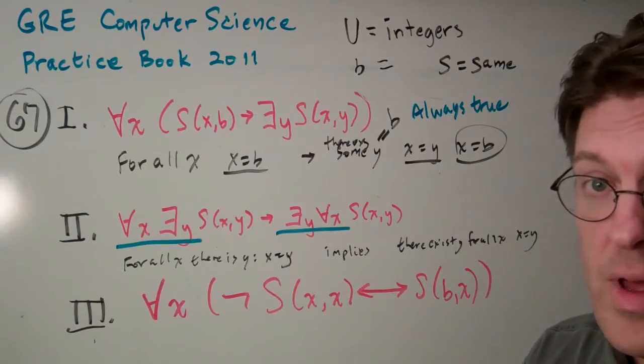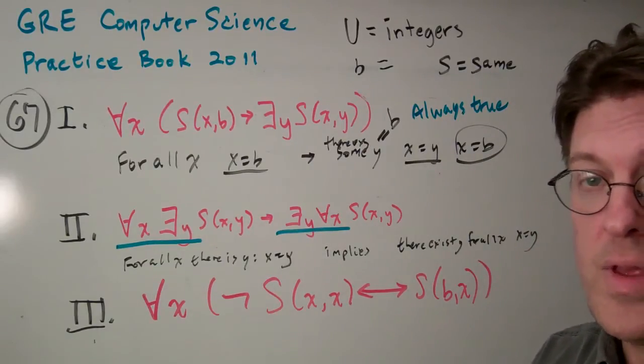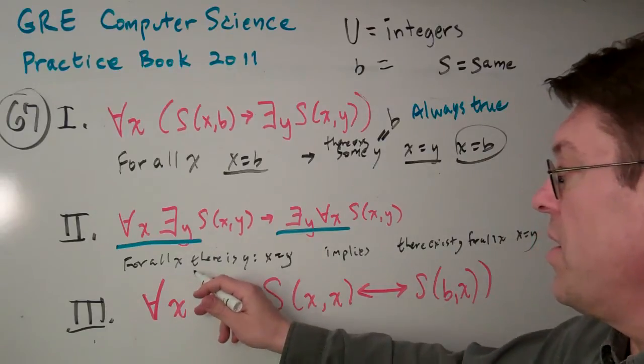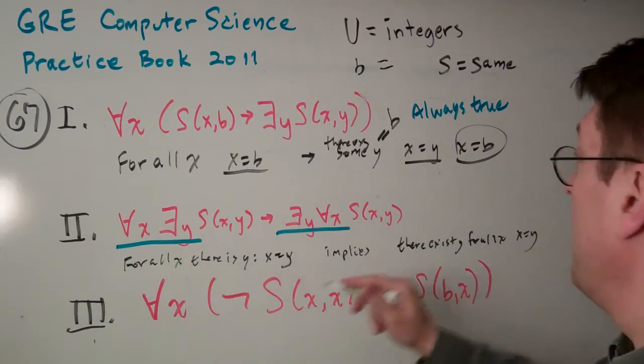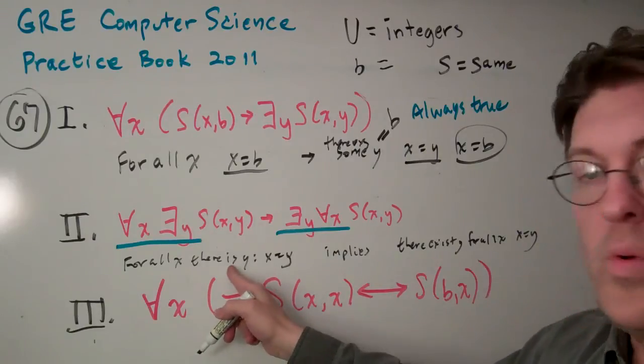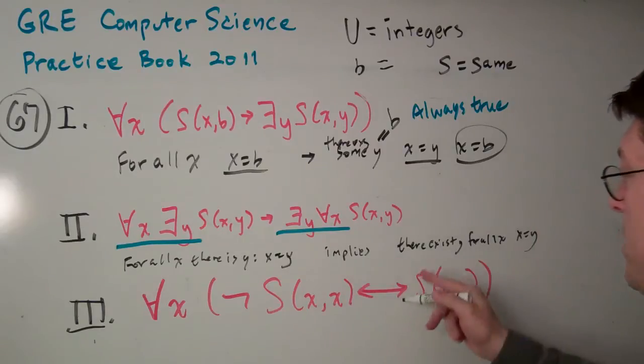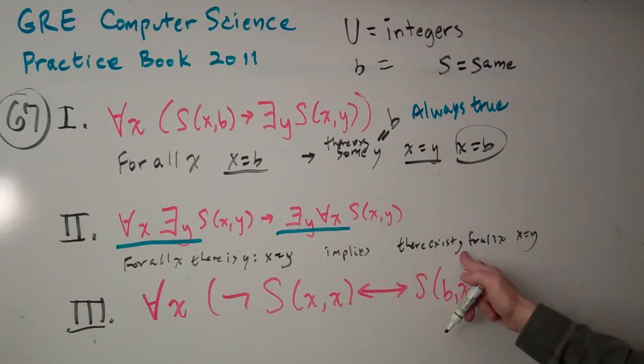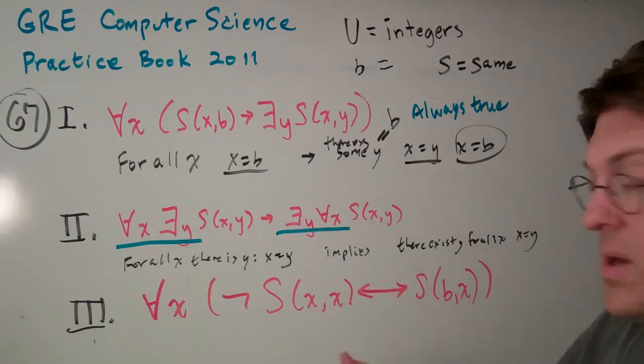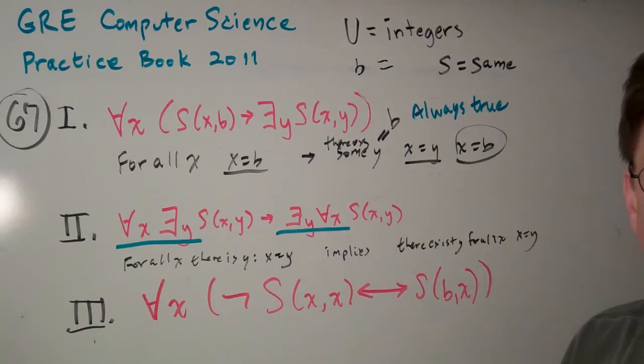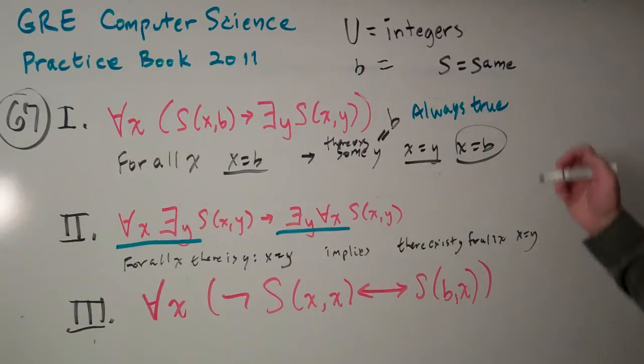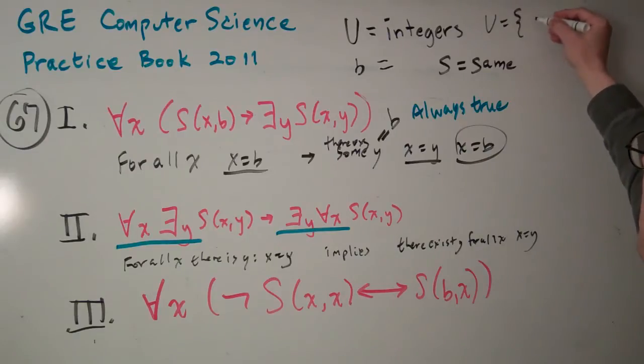These are not the same thing. I mean, if we say that every single X that's out there, every one of those X's has some kind of a Y where X equals Y. That's true. But this is saying that there exists a Y that for all X, X equals Y. Now, that's the only way that would be true is if the universe was the set of one number. Say that the one number was four.